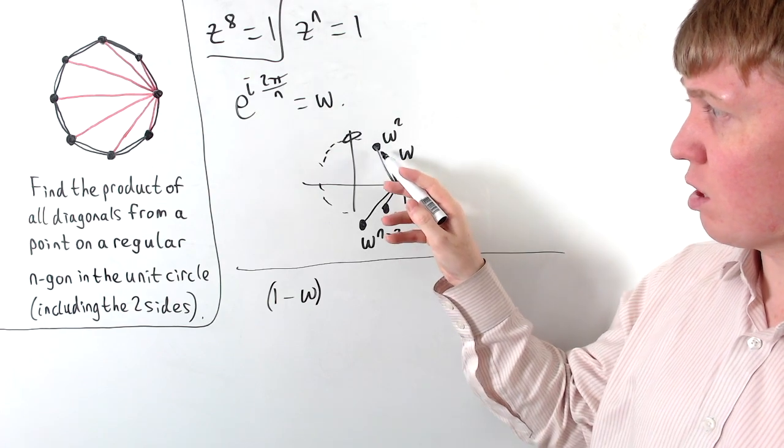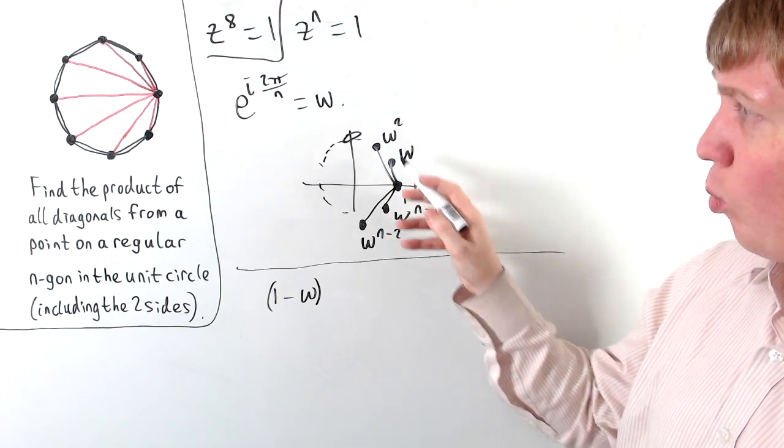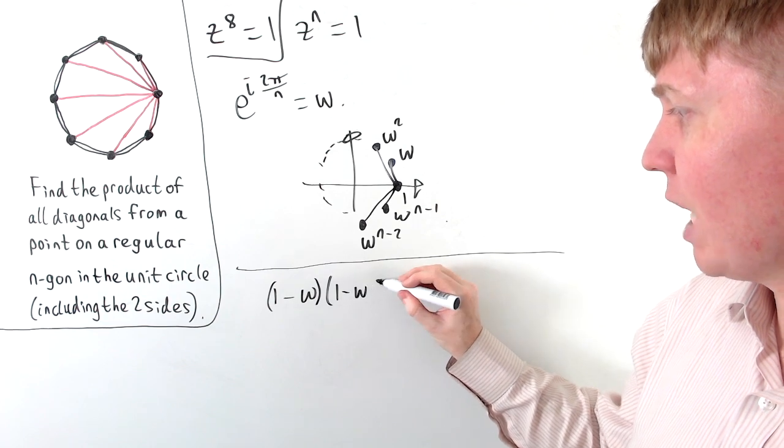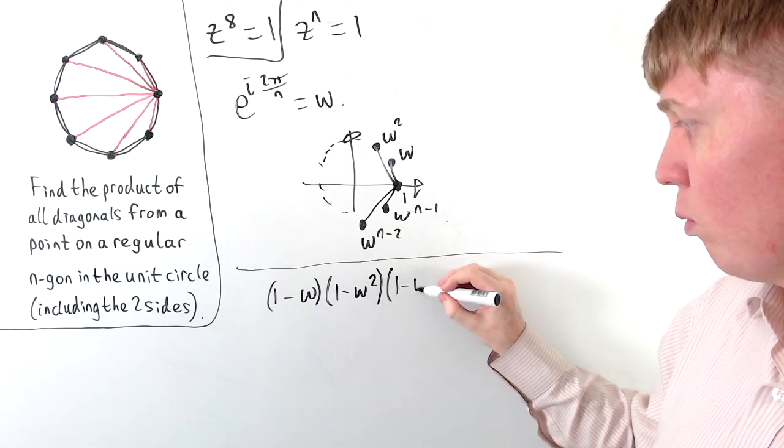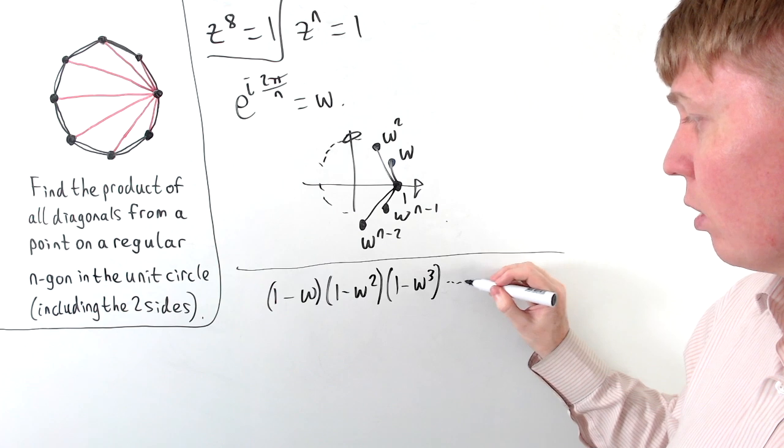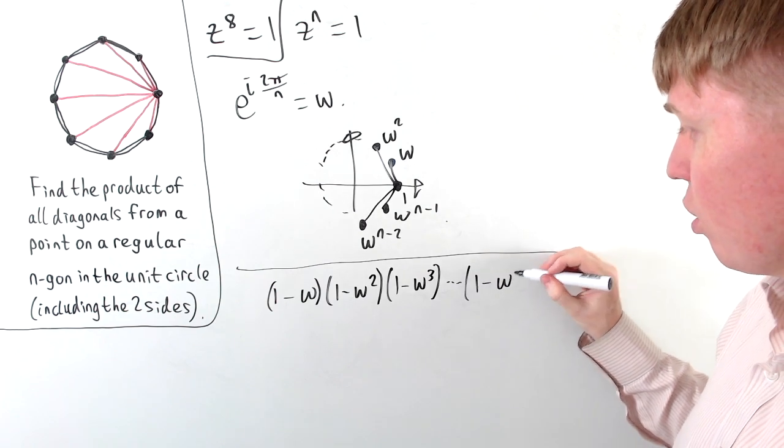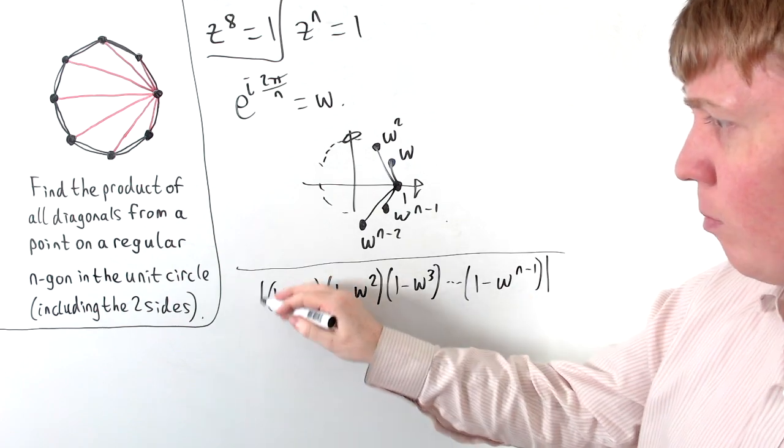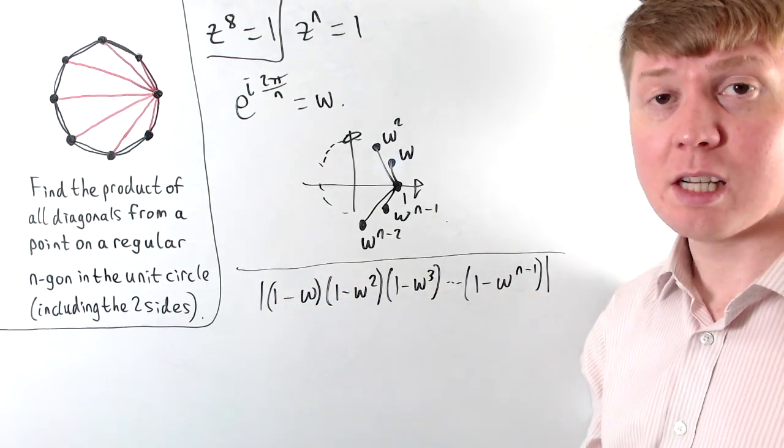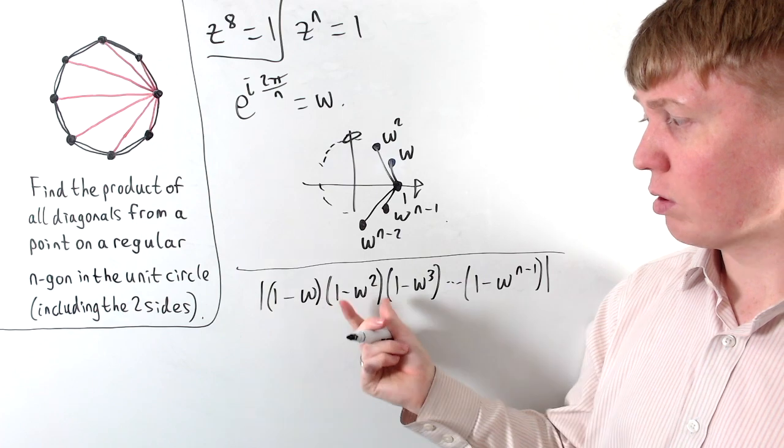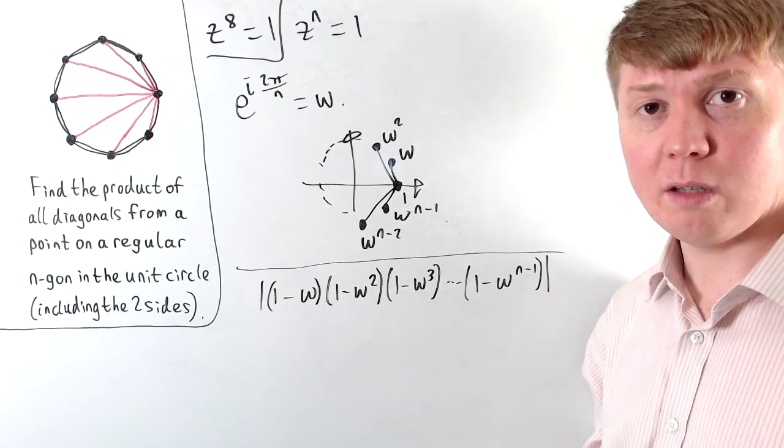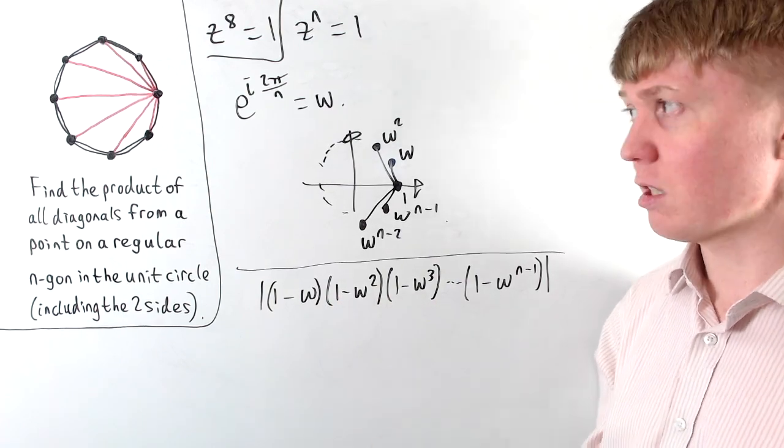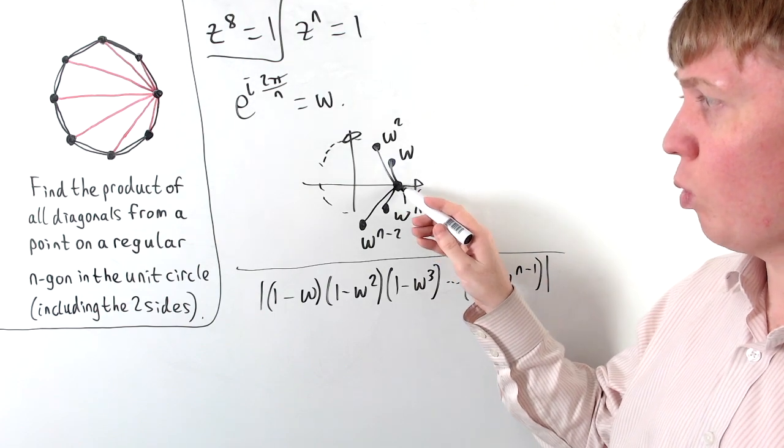And the second distance would be the modulus going from 1 to omega squared, so multiply by 1 minus omega squared, 1 minus omega cubed, and so on, all the way up to 1 minus omega to the n minus 1. So we just take the modulus of all of this product, which is the same as taking the product of each modulus separately. So this will give us the product of all of our distances emanating from this point at 1 here.